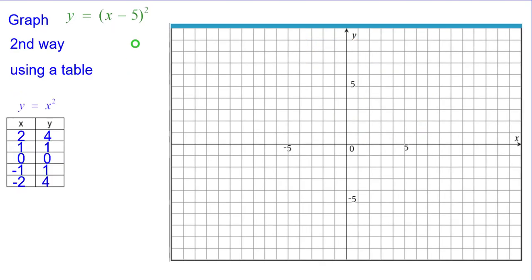The second way is using a table. So we'll have our standard parabola table with 5 key points on it. Again, this is my second table for y equals the quantity of x minus 5 squared.